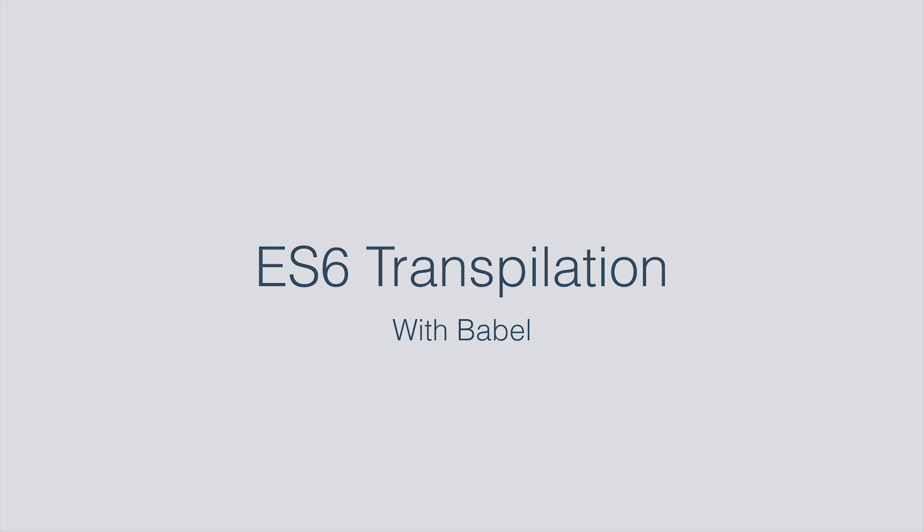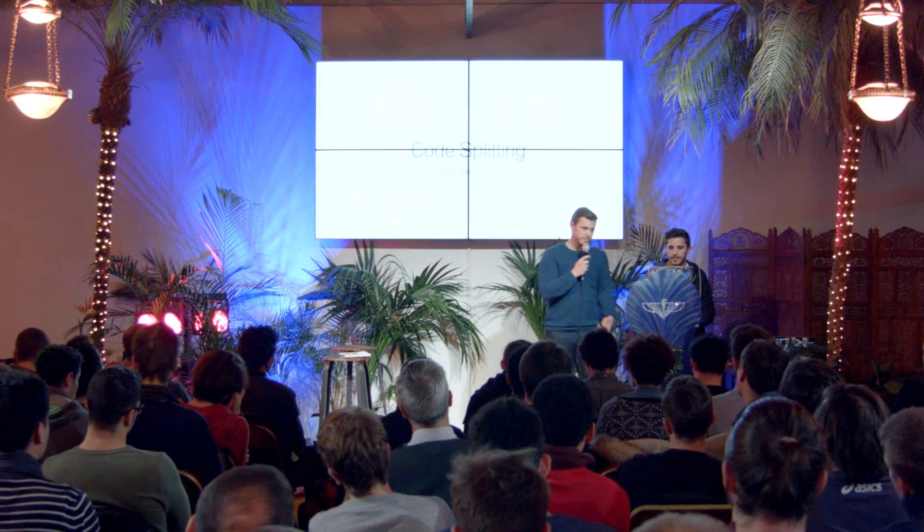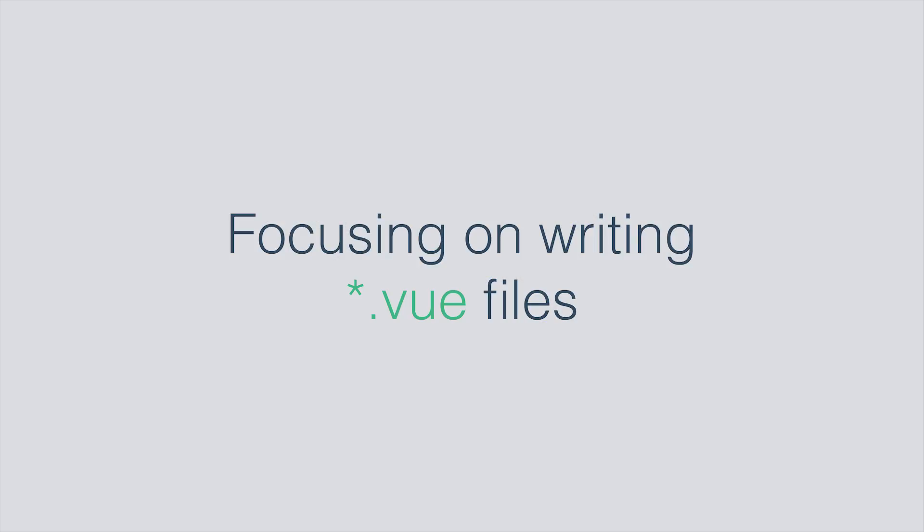We also add ES6 transpilation with Babel, so we can use ECMAScript 6. We also add code splitting with Webpack to just use the CSS and JavaScript we need to load in the browser, and of course Vue Loader. The most important thing with Vue Loader is .vue files, which allow us to write a single component in a single file. That's the point we try to follow — just being focused on writing .vue files. I will let my brother introduce some examples to show how this works.